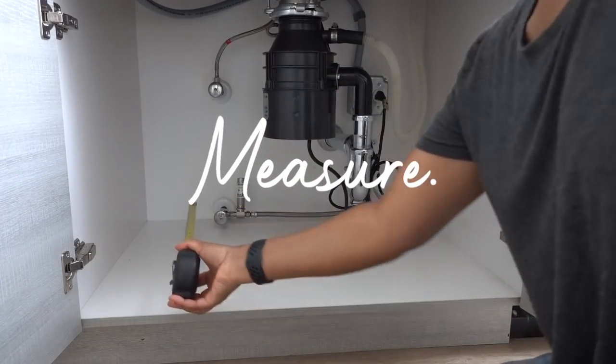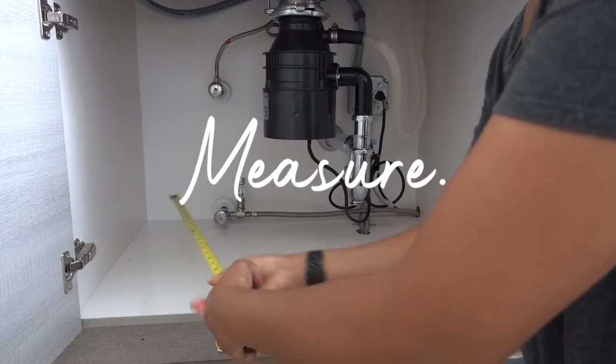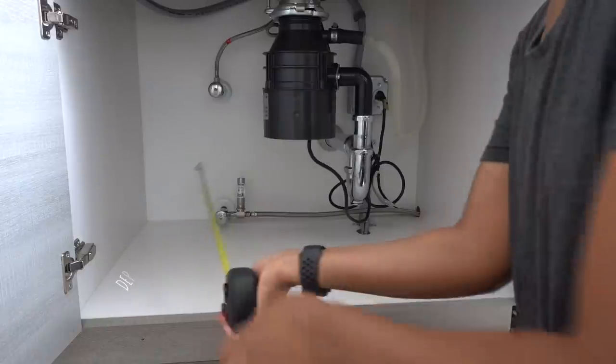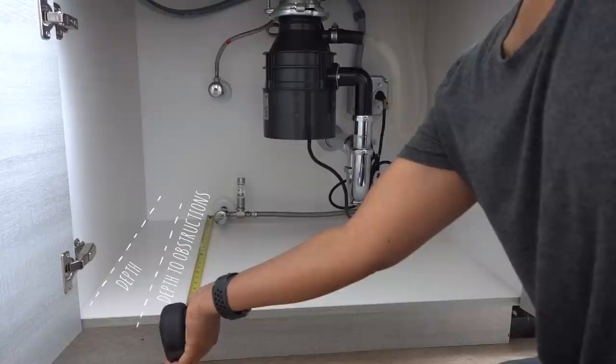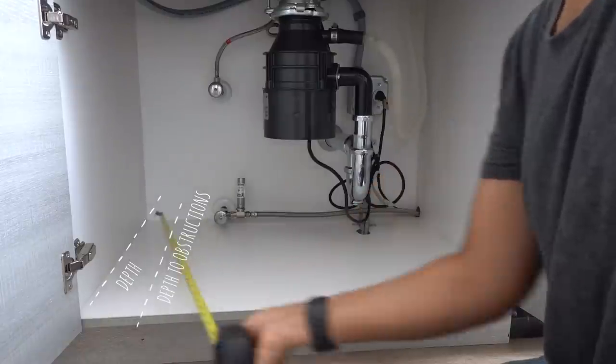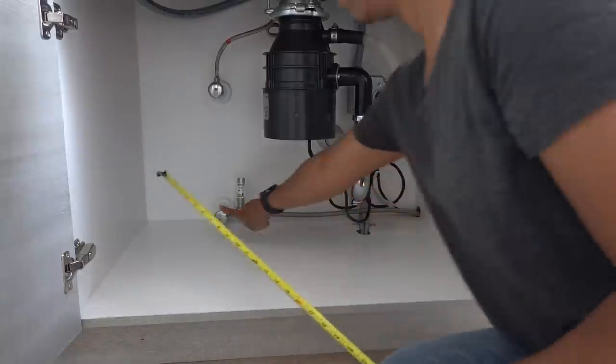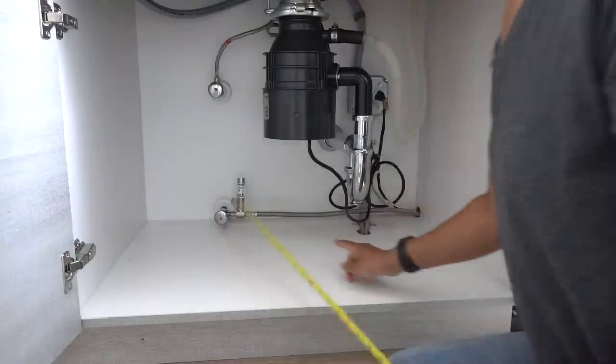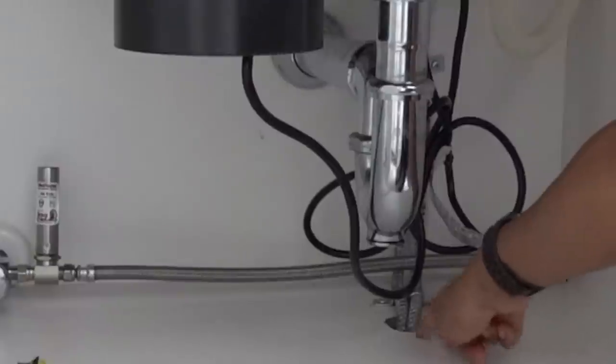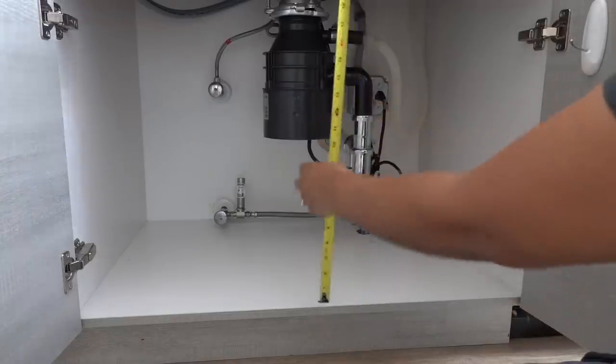So I'll show you how to get started when you're doing this under sink organization process. The first thing you definitely wanna do is measure. Now, you're not only going to want to measure the width and depth of your entire cabinet, but you're gonna wanna account for obstructions. There is a knob, like the water shutoff knob or something like that, along with some piping and tubing that's gonna interfere with any kind of organization solution you wanna install.